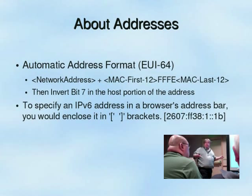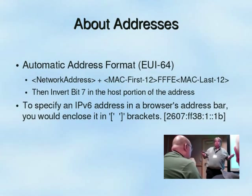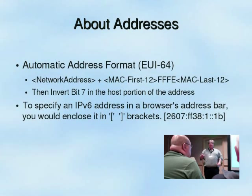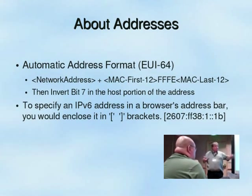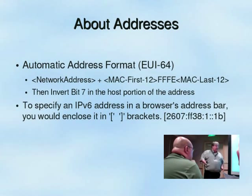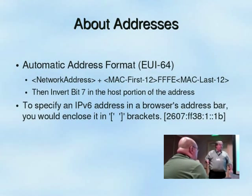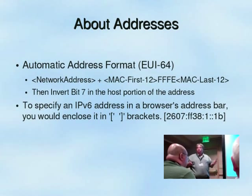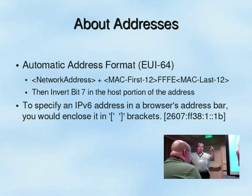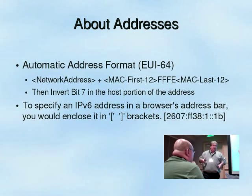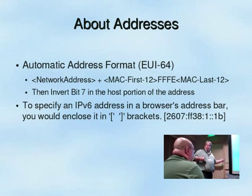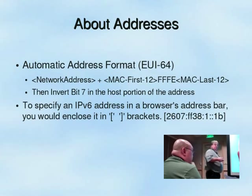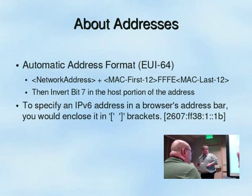When people first try to set up IPv6, they jump to the browser, type in the IPv6 address, hit enter, and it blows up — because the address has colons in it, and a colon in an HTTP address means a port. The way we get around that is to put the IPv6 address in square brackets.